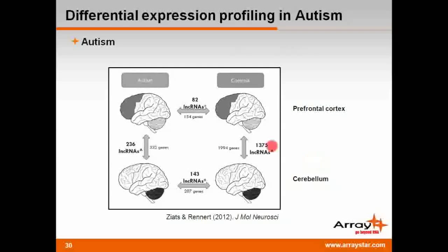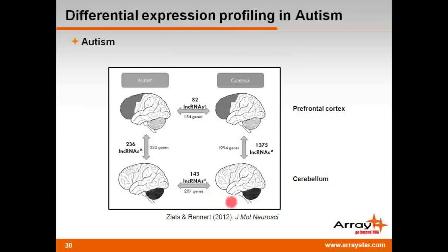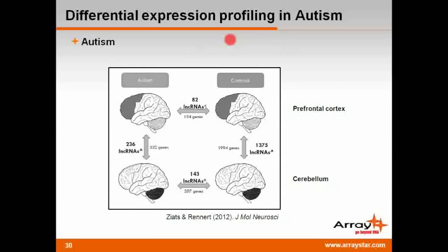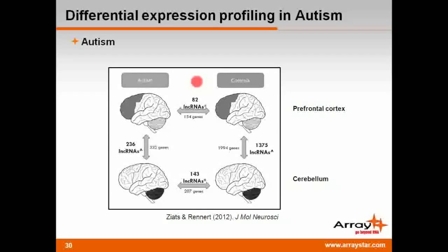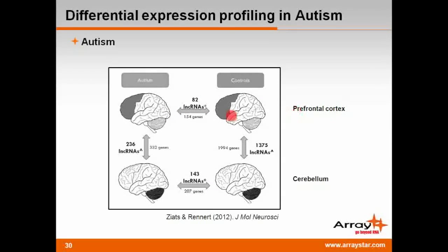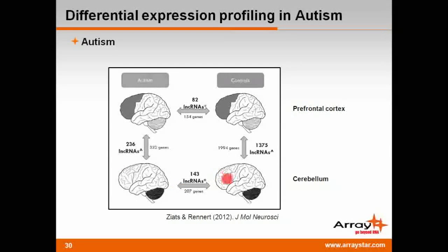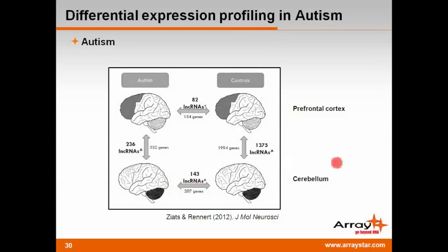These results offer promise for using BACE1-AS as a treatment target for this devastating, currently incurable disease. In a very recent publication, NIH investigators profiled LNCRNA and mRNA expression in autism. The results indicate that 82 LNCRNAs are differentially regulated in the prefrontal cortex of autism patients versus controls, while 143 LNCRNAs are differentially regulated in the cerebellum.